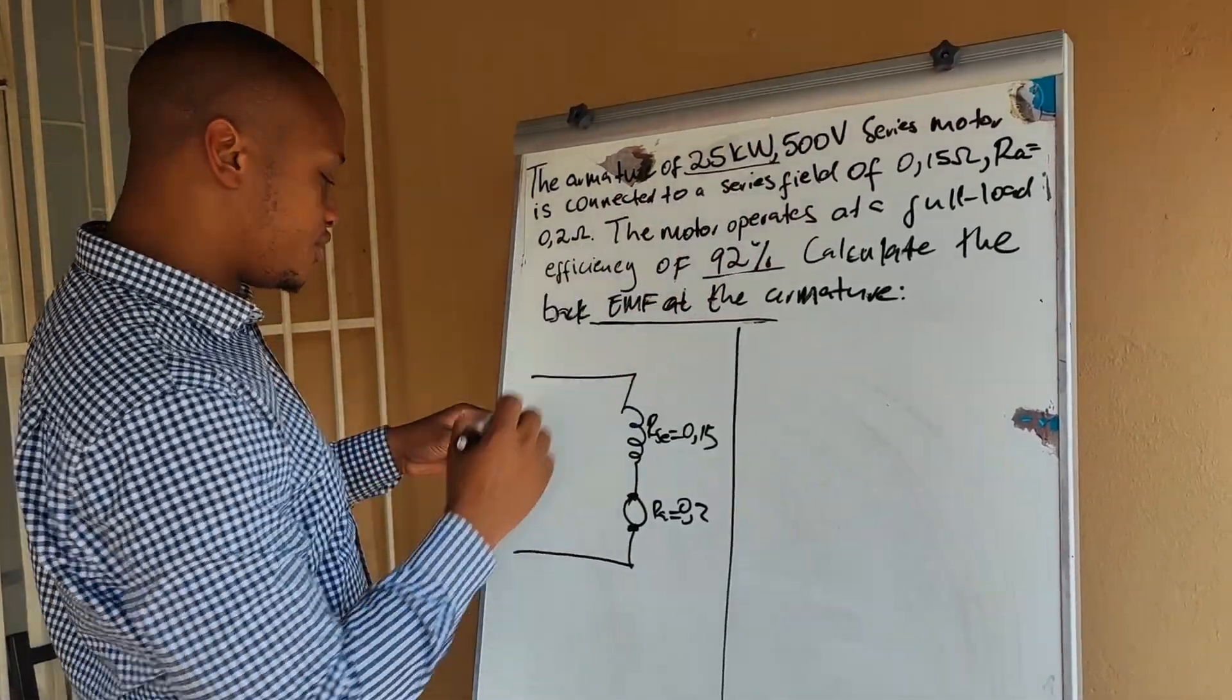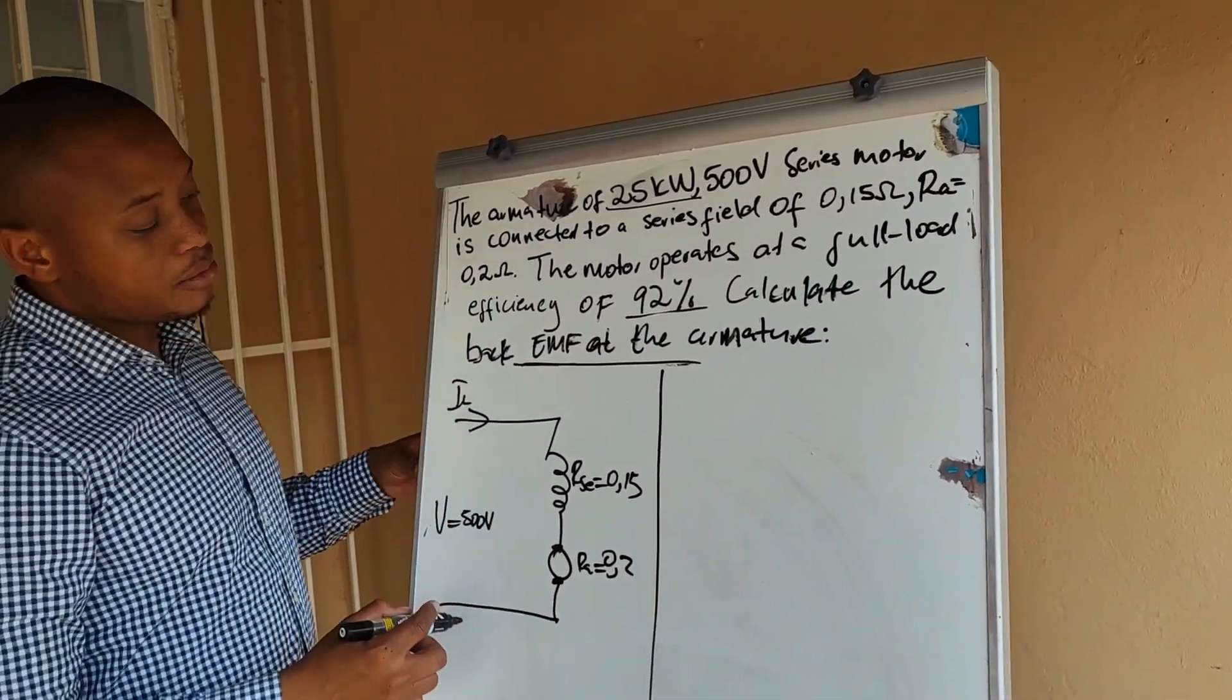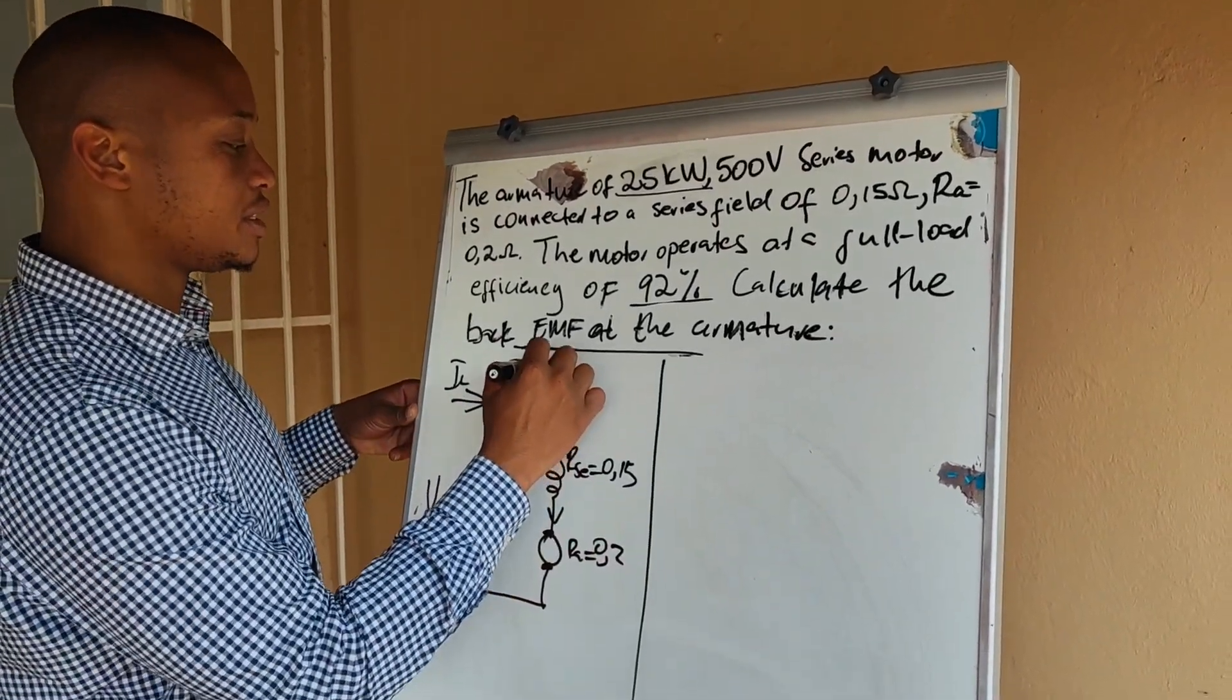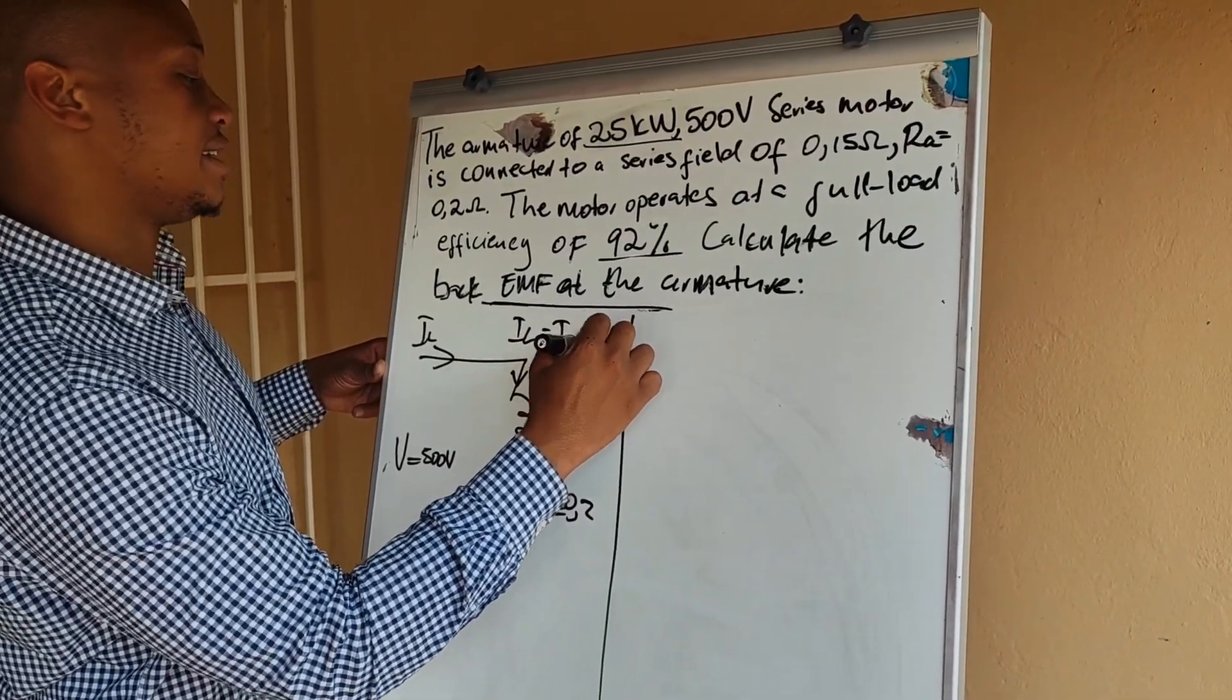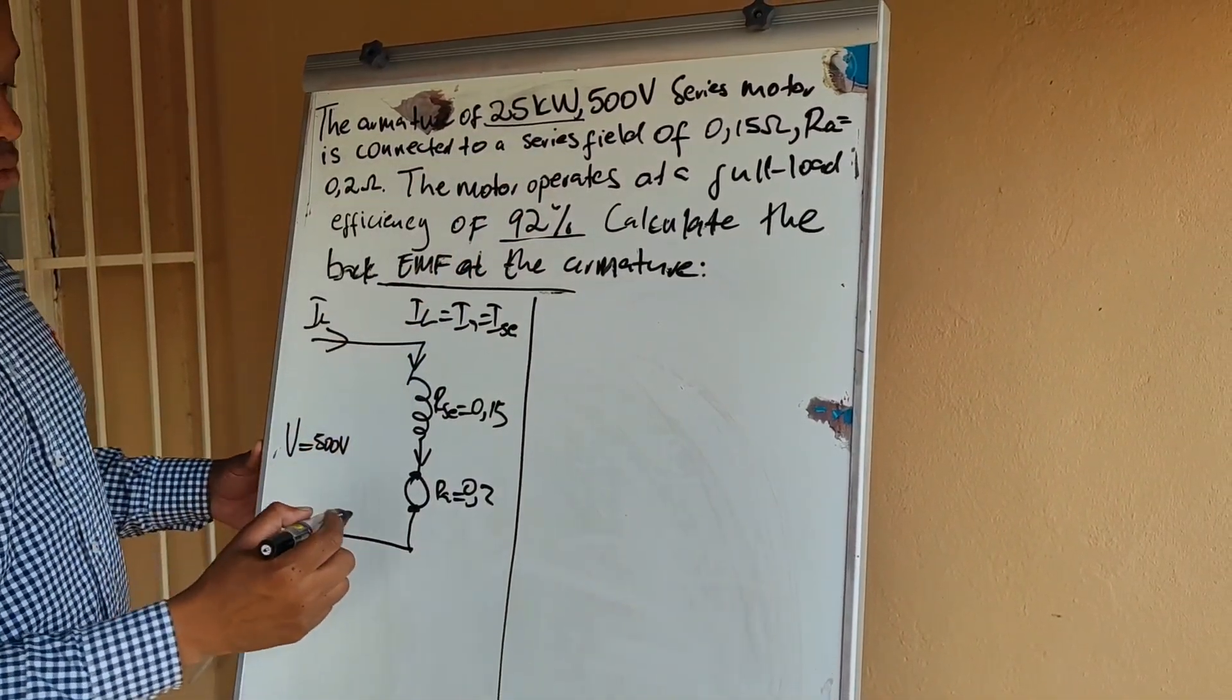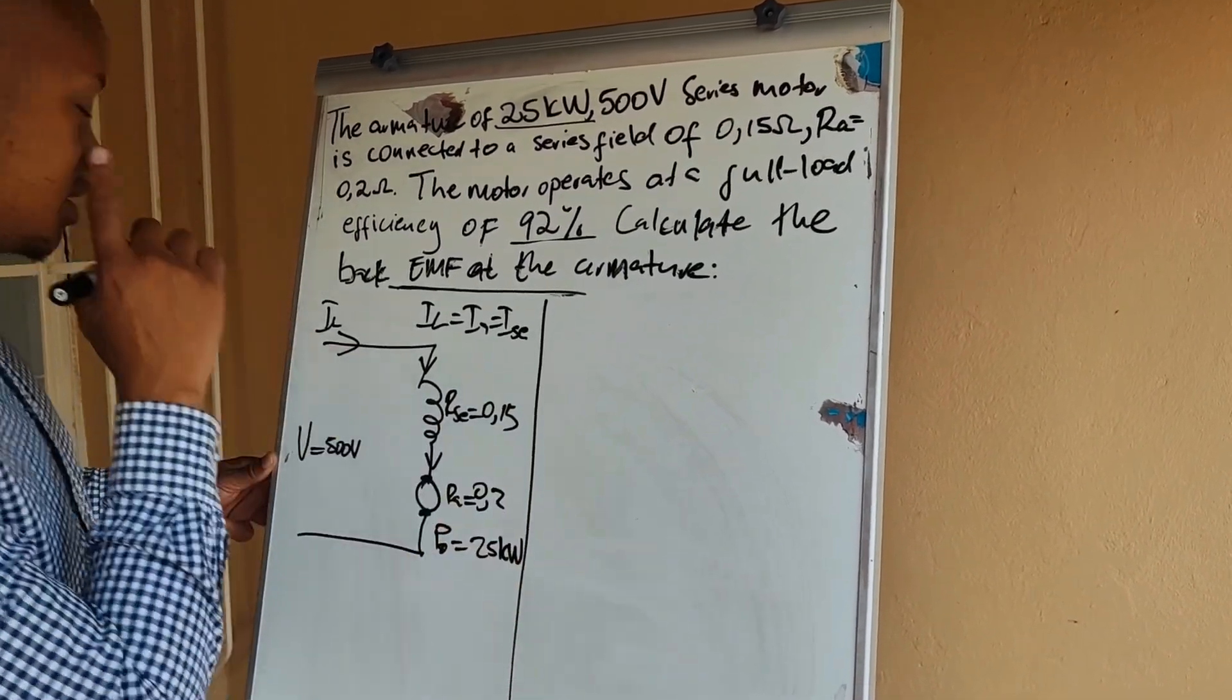We are given the input voltage V which is equal to 500 volts and we are not given a line current. But we do know that the line current is equal to the field current which is also equal to the armature current. So basically IL equals IA which equals ISE. We are given an output power. Remember the ratings of the machine is the output power. So P out, the output power at the armature will be equal to 25 kilowatts.